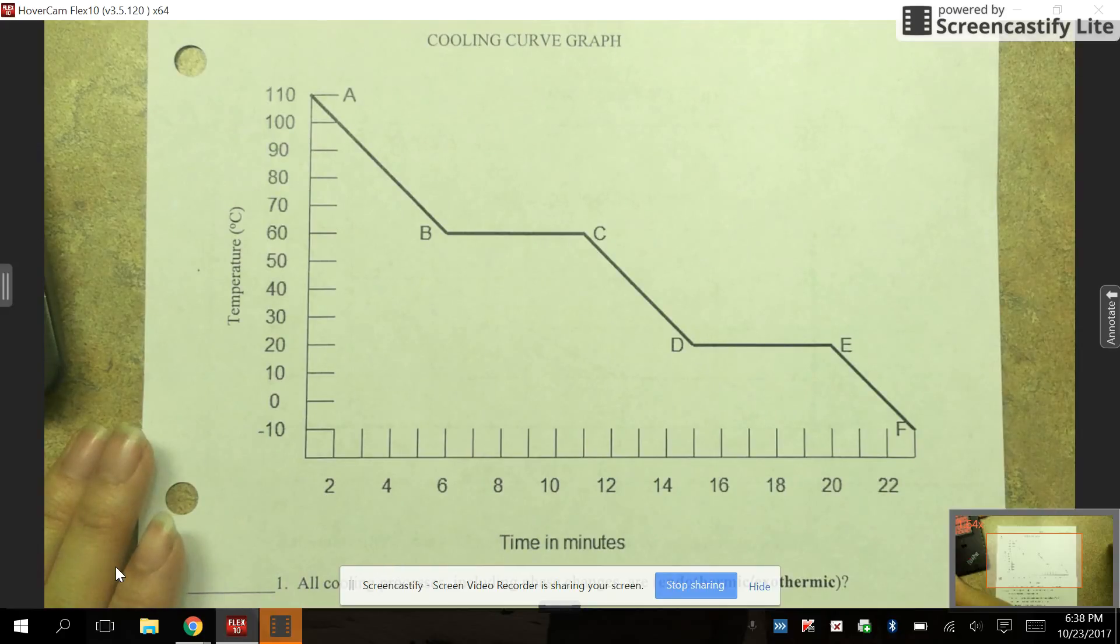And also whether it is going to be melting, freezing, condensing, or vaporizing. As we go through this we're going to label the key parts that you need to understand to be able to interpret this graph. So make sure you're following along.